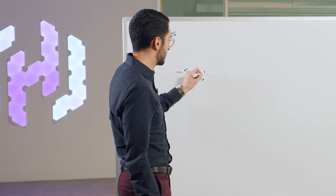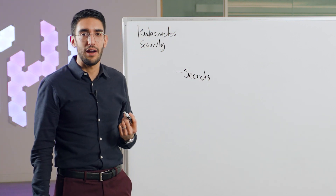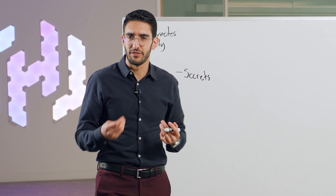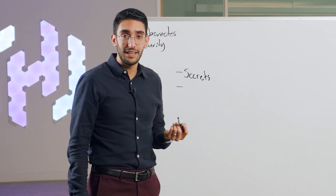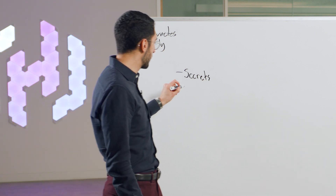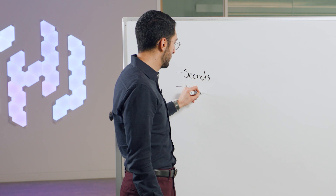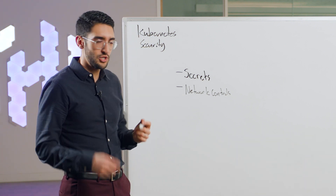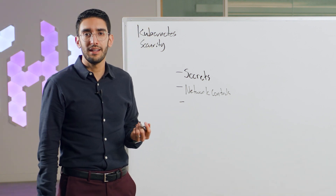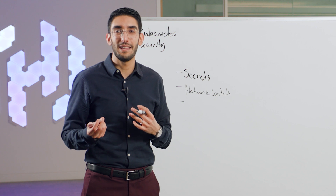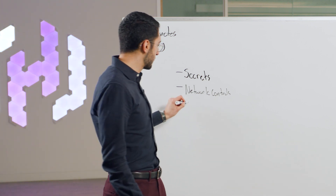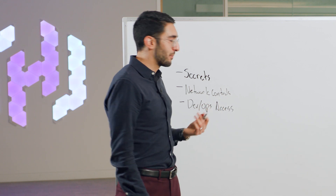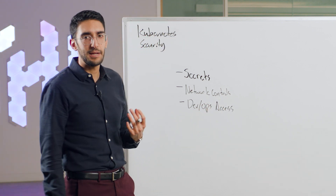There are a handful of top-of-mind security areas. The first is how we think about secrets that our applications need access to — things like database credentials, certificates, or API tokens. Second is networking controls: our Kubernetes applications rarely live in isolation, so how do we restrict which applications are allowed to talk to which other services? Third is human access: developers and operations teams need access to these environments in a secure way.